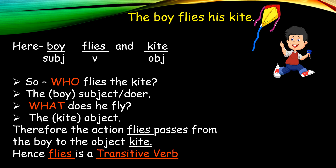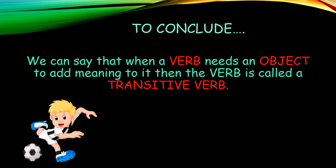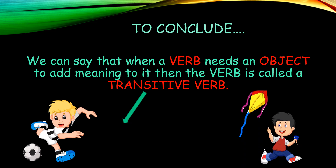I hope transitive verb is clear to all of you. To conclude, we can say that when a verb needs an object to add meaning to it, then the verb is called a transitive verb. The examples are kicks and flies.